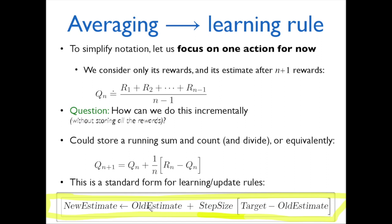It's really a simple optimization problem: take the old estimate and assume you're right. If target minus old estimate equals zero — meaning the reward was exactly what we expected — the update is zero, and Q_{n+1} equals Q_n. That makes sense: if reality matched your expectation, your model shouldn't change. But if it was different, you want to change your model to fit reality. If you overestimated, you get a negative number and push the estimate down. If you underestimated — the reward was higher than expected — you push it up. The step size controls how much.